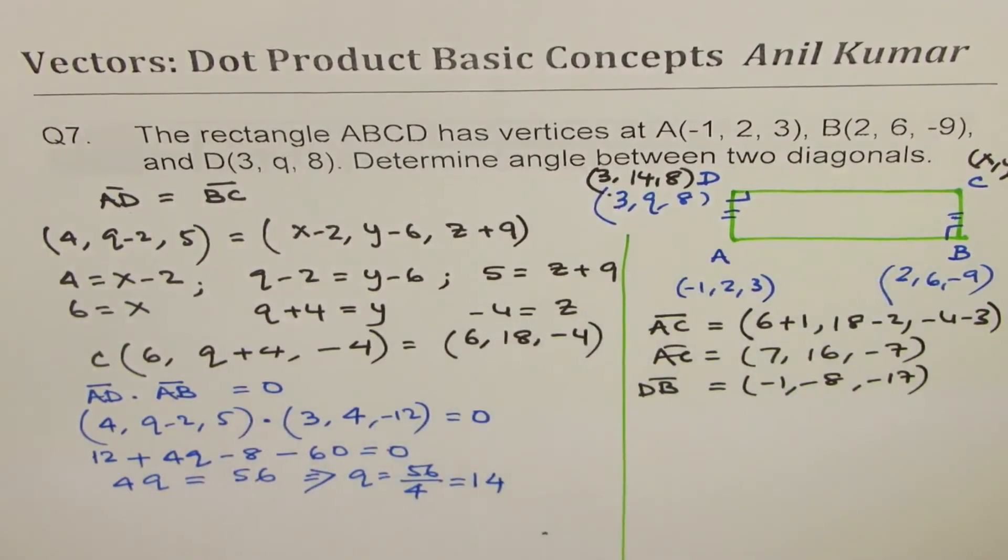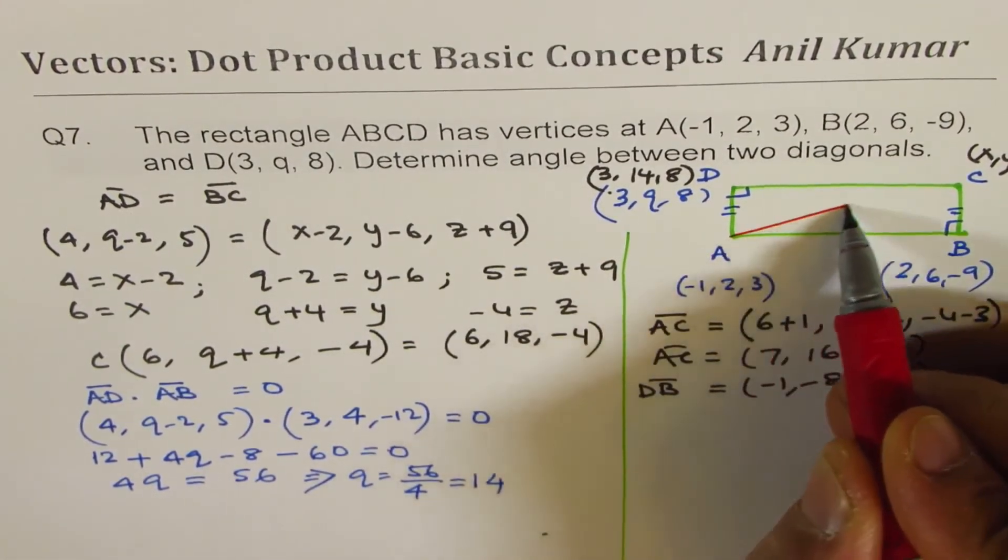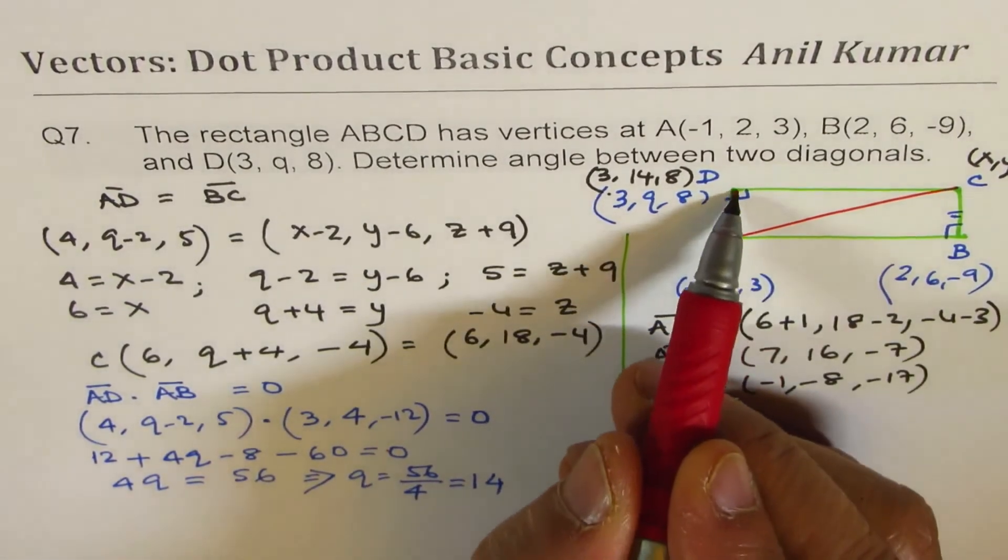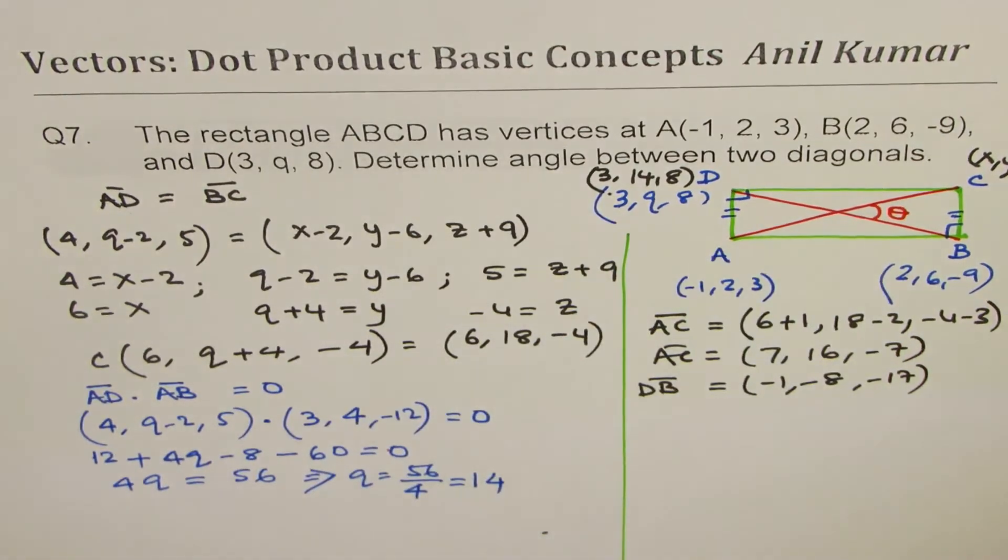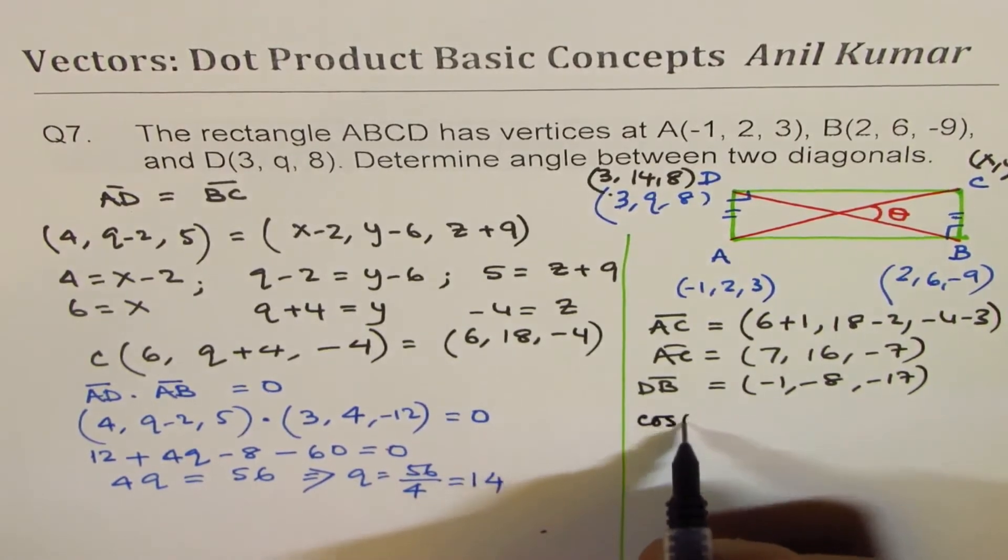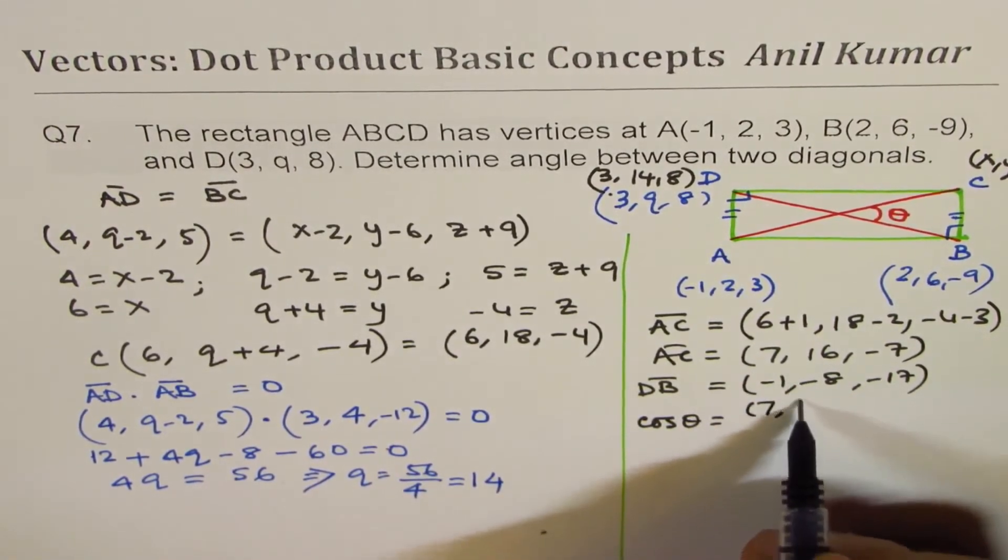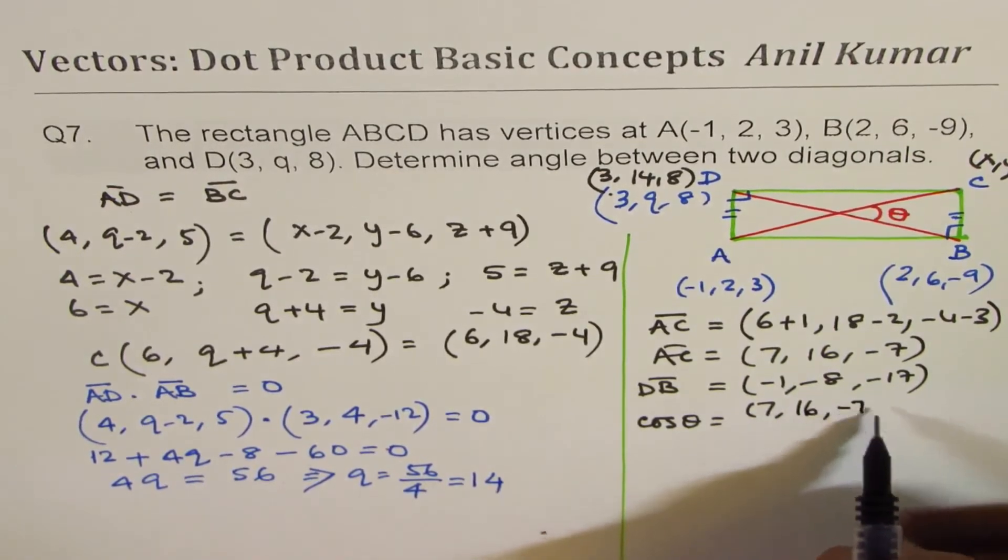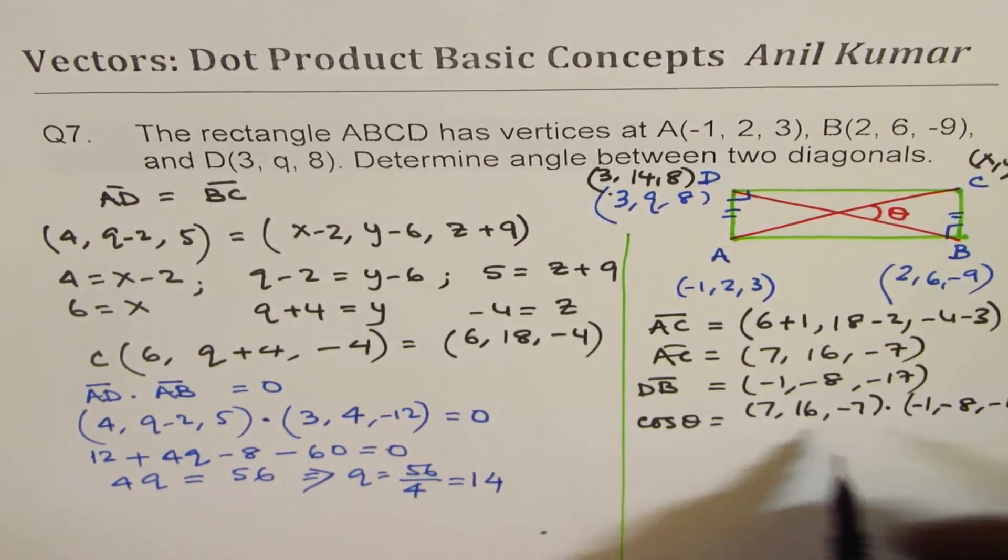Now to find the angle between them, that is the angle theta we want. So cos θ is equal to the dot product of these two. So (7, 16, -7)·(-1, -8, -17)